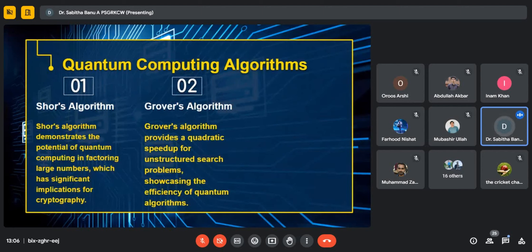These two algorithms are very helpful in solving or finding factorization for large numbers and for finding the quadratic speed-up for unstructured search problems. These algorithms help in increasing the efficiency of quantum computing.